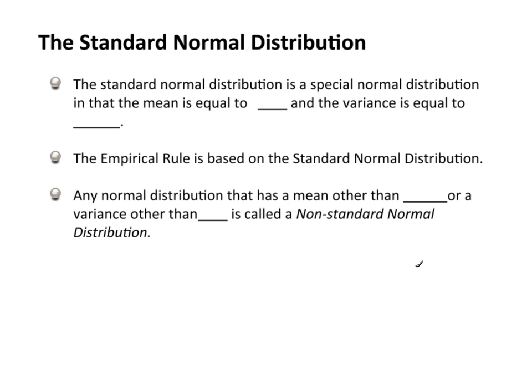Let's talk now about the idea of the standard normal distribution and, of course, a non-standard normal distribution. The standard normal distribution is a special normal distribution in that the mean is equal to 0 and the variance is equal to 1.